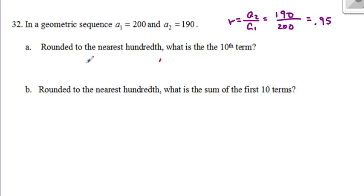So I want to find the 10th term. I remember my formula for geometric sequence for terms is a_n equals my first term times the ratio to the n minus 1 power. So I'm finding the 10th term. I know the first term is 200. I know the ratio is 0.95, and I'm going to plug in a 10 up here, 10 minus 1.